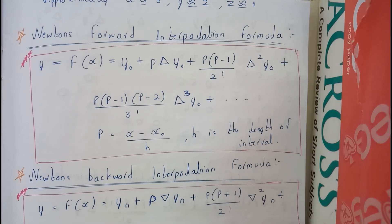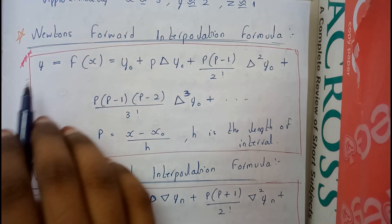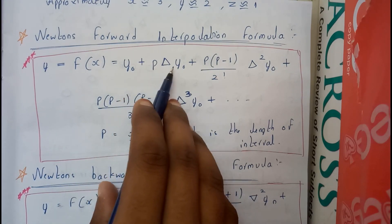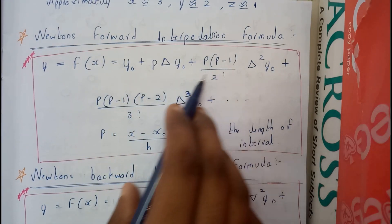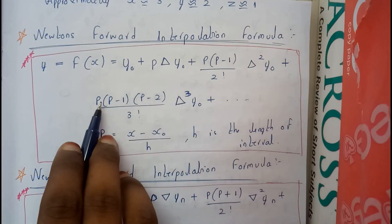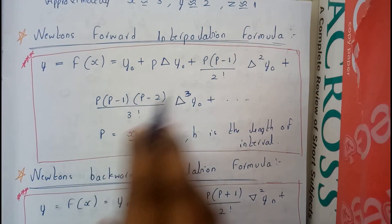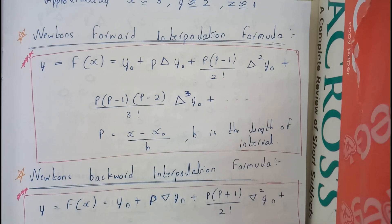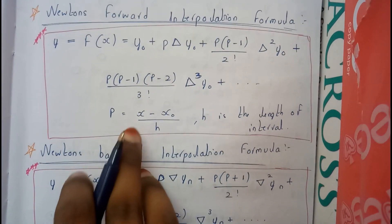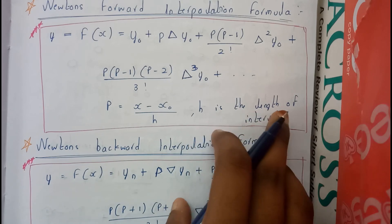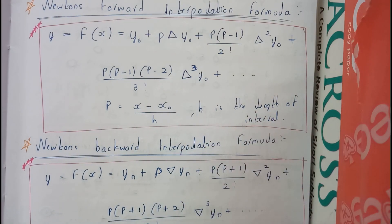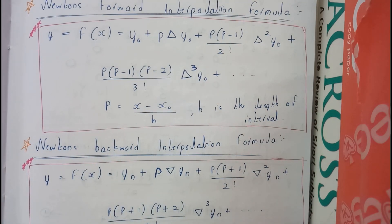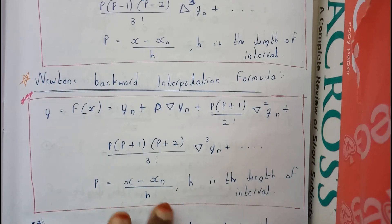First, let us go through Newton forward interpolation formula: y = f(x) = y₀ + p·Δy₀ + p(p-1)/2! · Δ²y₀ + p(p-1)(p-2)/3! · Δ³y₀ + and so on, where p = (x - x₀)/h. Here h is the interval length — the difference between consecutive x values — and x and x₀ are given directly in the question.